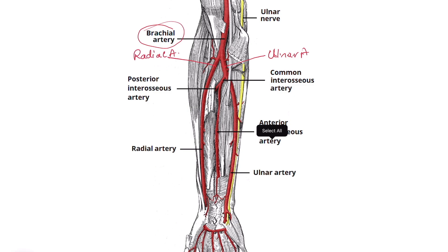In this diagram, the superficial muscles of the front of the forearm have been reflected out. You can see that the radial artery is superficially placed. If you reflect the muscle that covers the radial artery — called brachioradialis — you easily find this radial artery, which is accompanied by a nerve of a similar name: the superficial branch of the radial nerve. So the artery and nerve are both superficially placed structures.